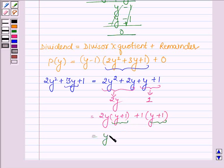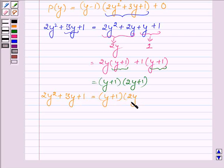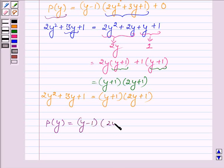Now taking (y+1) common we have (2y+1) and thus 2y² + 3y + 1 can be written as (y+1)(2y+1). Hence p(y) which equals (y-1)(2y² + 3y + 1) can be further written as (y-1)(y+1)(2y+1).